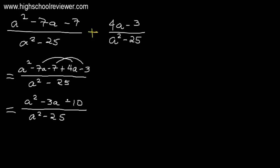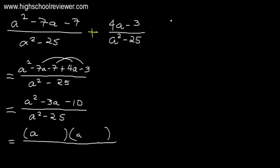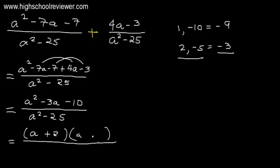Since the numerator can be factored, we will factor it out. The factor of a squared is a multiplied by a. We need factors of negative 10 that give a sum of negative 3. Since the result is negative, the larger factor should be negative. Trying positive 1 and negative 10 gives a sum of negative 9 — not equal to negative 3. Trying positive 2 and negative 5 gives 2 plus negative 5 equals negative 3. We will use these factors: positive 2 and negative 5.